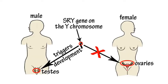The Y chromosome is much smaller than the X chromosome and contains far less genetic information. However, it contains a gene that is not present in the X chromosome that triggers the development of embryonic gonads into testes rather than ovaries.